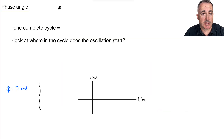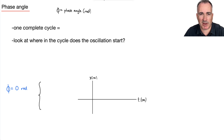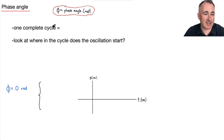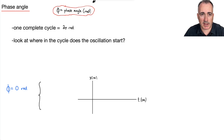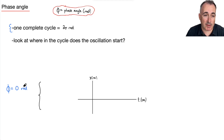φ is the phase angle measured in radians. One complete cycle is two pi radians — that's a key piece to know, because then we can look at different examples.